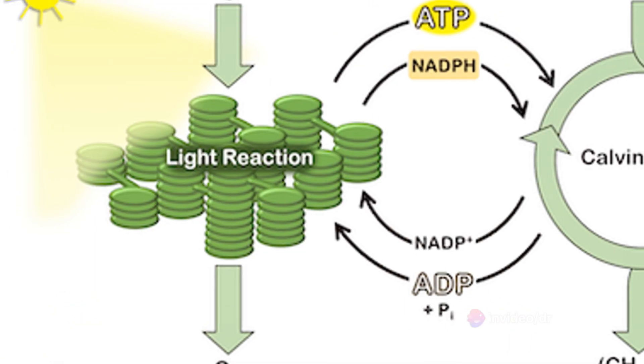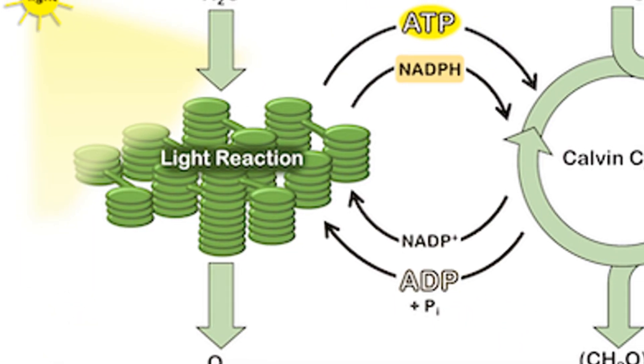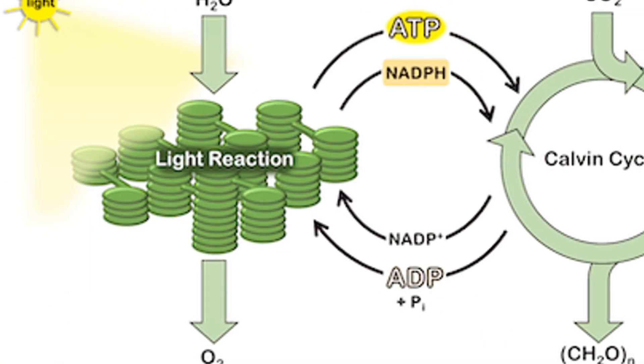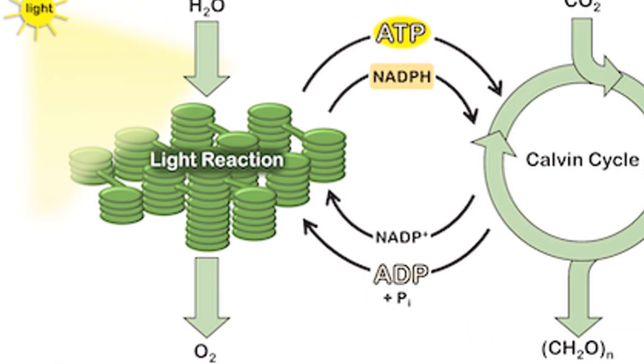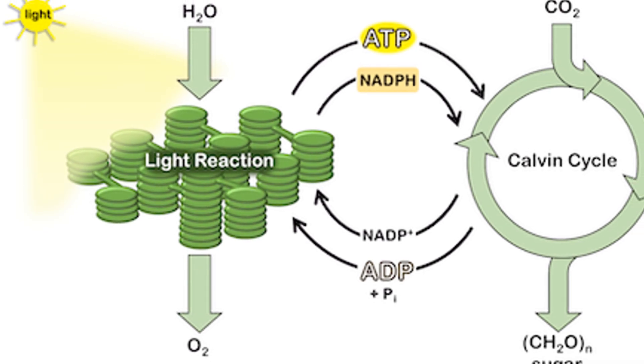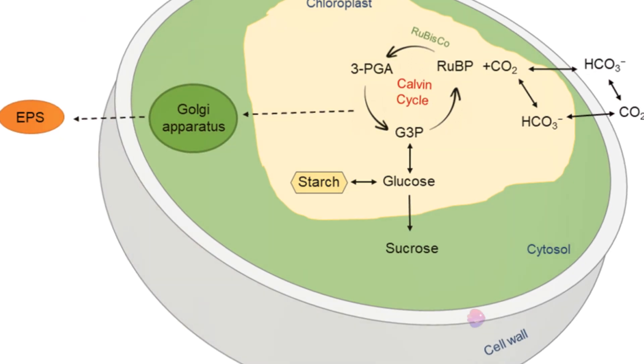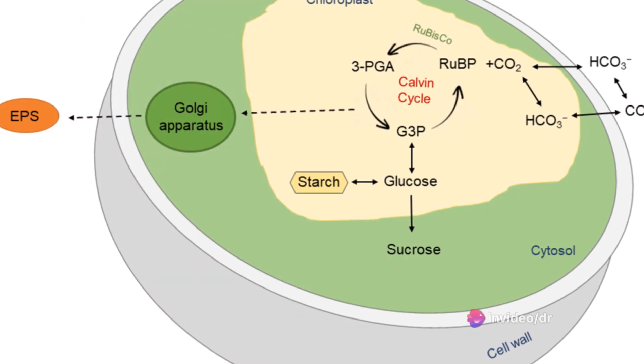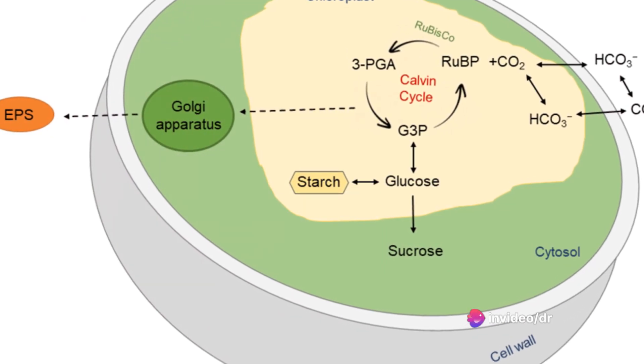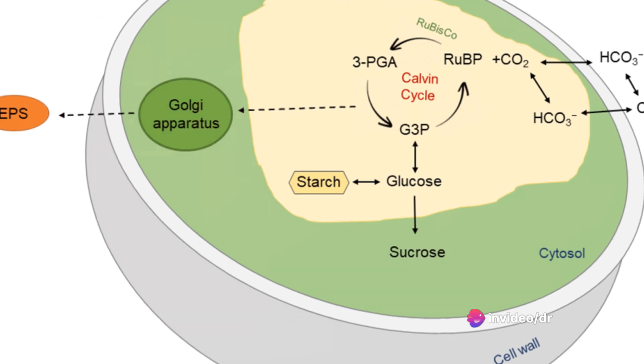ADP and NAD+ molecules return to the light-dependent reactions to get re-energized. One of the G3P molecules leaves the Calvin Cycle to contribute to the formation of glucose.